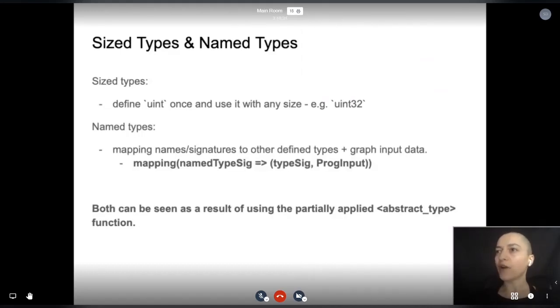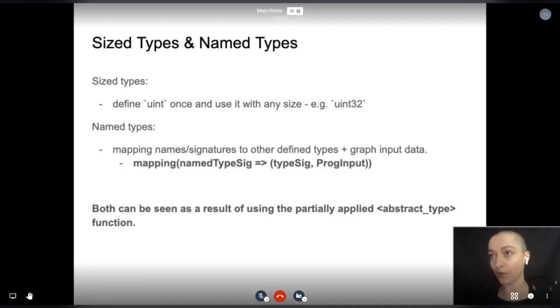When you define a type that can have sizes, for example uint, you don't need to define every size type. You don't need to store another definition for uint 156. You can think about the abstract type uint as a partially applied function. We also have support for named types. You shouldn't be able to add apples and oranges, nor the various ERC20 tokens together. Now for a short demo.